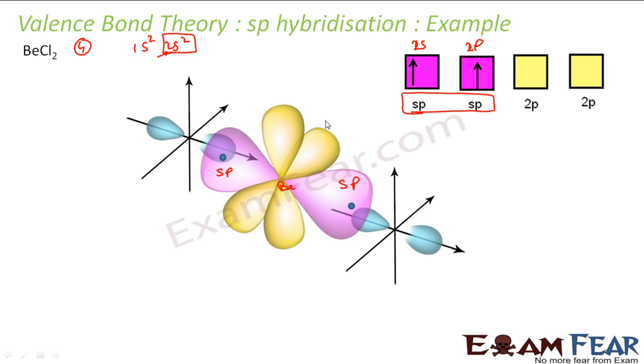So what happened? We had one beryllium molecule which had two electrons in the 2s orbital. In the excited state, one electron moved to 2p. So we have one electron in 2s and one electron in 2p. So 2s and 2p hybridized to form sp hybridized. Both have same shape and energy and both have one electron.